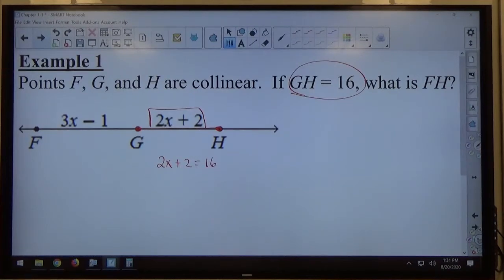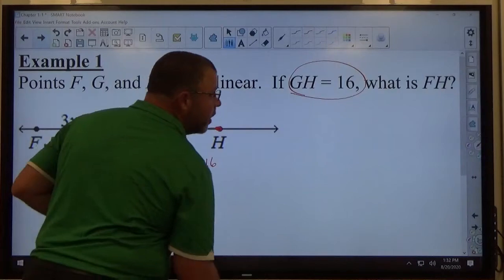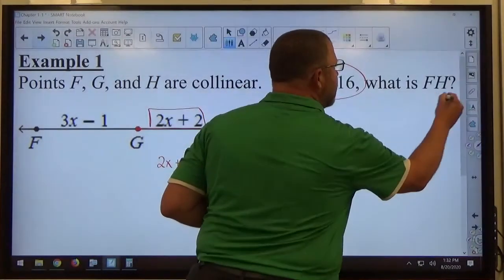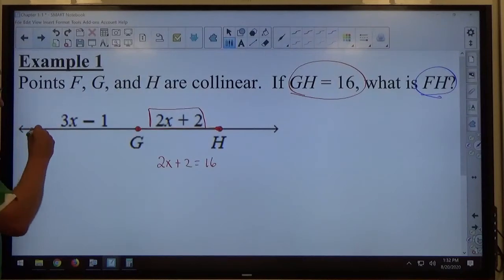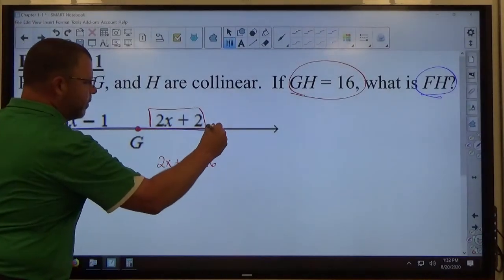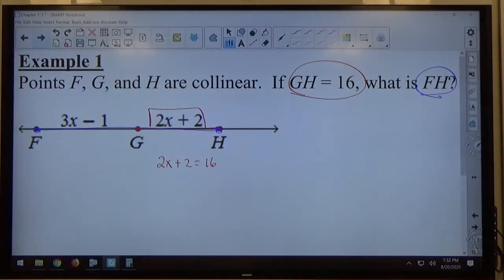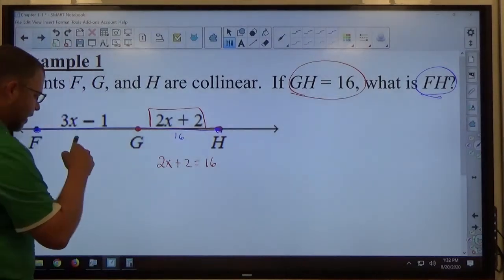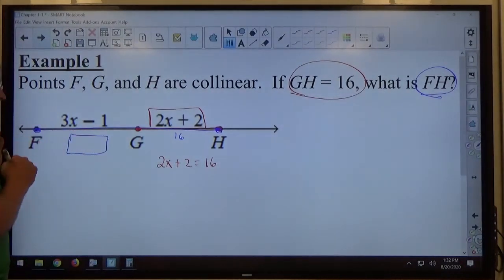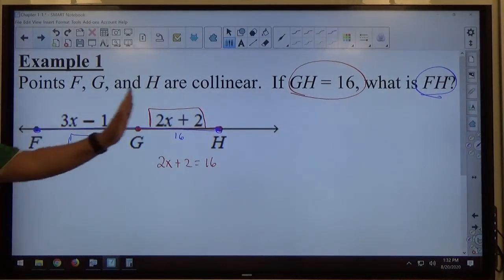If I continue reading, it says, what is FH? So ask me to find FH here, and FH is the distance from F all the way to H. Okay, what else would I need to know in order to find out how long FH is? What FG is. What FG is, right? Because we already know GH is 16, so if I can figure out what this amount is, then I can definitely figure out how long FH is.